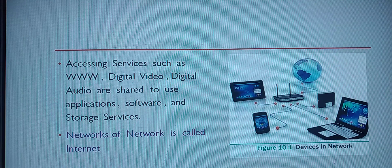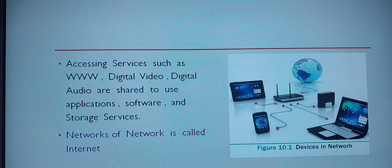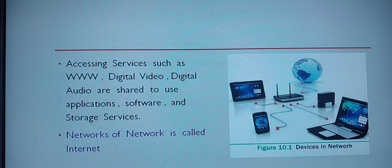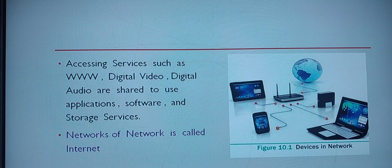A network of networks is called the internet — we are discussing the concept of network, not internet. Many, many networks together will form the internet. For example, consider a multinational company having many branches worldwide. Each and every day it needs to get reports — sales figures, customer feedback, everything noted daily. If each branch is connected by means of the internet, it is easy to collect all information at any needed time.